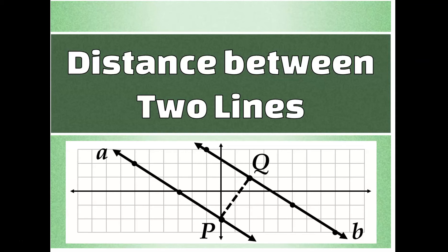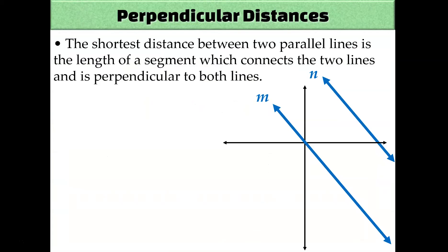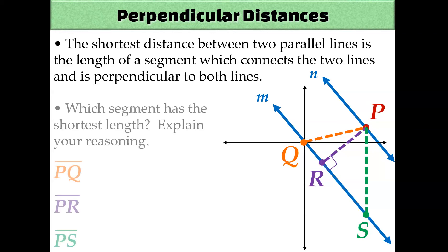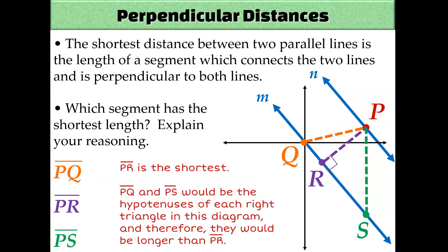We will only be calculating the shortest distance between two parallel lines, and to do so we'll need to know the perpendicular slope between those two lines. As discussed in our previous video on calculating the shortest distance between a point and a line, the same idea holds: the shortest distance between two lines is a perpendicular distance. PR would be the shortest distance because it is the leg of a right triangle rather than the hypotenuse. For example, PQ is the hypotenuse of this right triangle, so PQ and PS would both be longer than PR.